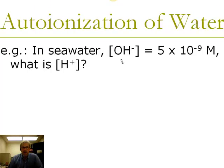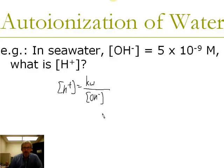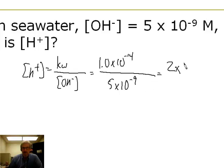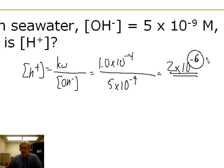For example, in seawater the OH⁻ concentration is 5 × 10⁻⁹ M. What's the H⁺ concentration? The concentration of H⁺ is always Kw divided by [OH⁻], so that's (1 × 10⁻¹⁴) ÷ (5 × 10⁻⁹) = 2 × 10⁻⁶ M. Since 10⁻⁶ is less negative than 10⁻⁷ — meaning you have only 6 zeros in front of the 2 rather than 7 — the H⁺ concentration is higher than in pure water, so seawater is actually an acidic solution.